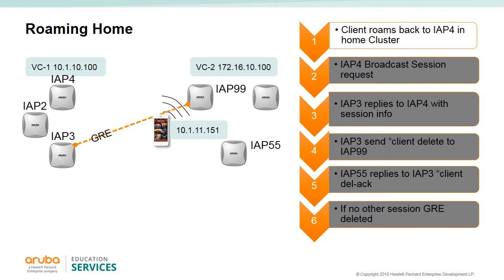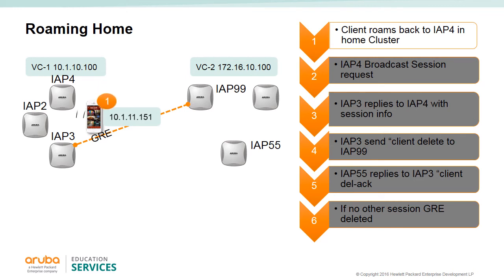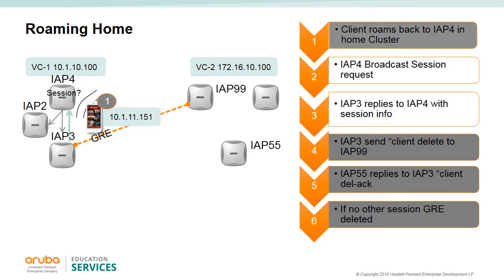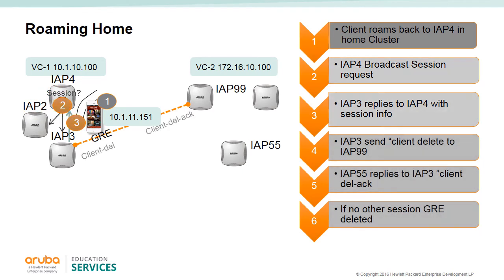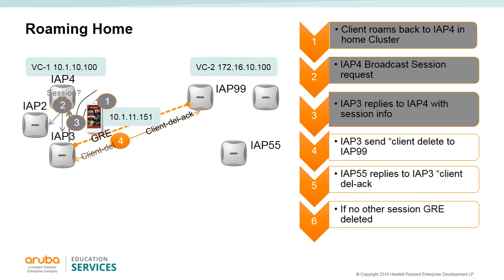Now we will look at the process of roaming back to the home cluster. A client had roamed from cluster VC1 on AP3 to cluster VC2 on AP99. That same client now roams back to VC1 on AP4. The new AP4 sends out a session broadcast asking about the client, and AP3 sends a session reply to AP4 with the session information. AP3 then sends a client delete to AP99, which replies with a client delete acknowledgement. If no other clients are using the GRE tunnel, it is deleted.